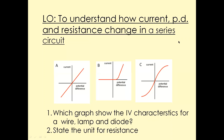On today's lesson we're going to look at how the current, the voltage (which is the same as potential difference), and the resistance change in a series circuit. We'll also look at the parallel circuit. That's going to be a one-mark question in the exam — they'll give you a few choices and ask which graph represents the IV characteristic for a wire, which one is for the bulb or the lamp, and which one is for the diode. So we'll look at some IV graphs.